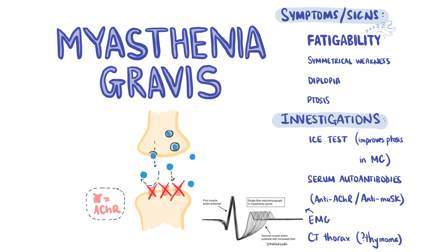Usually, the first symptoms a patient will experience are diplopia and drooping of the eyelids. The first-line test for myasthenia gravis in patients with ptosis is the ice test. Crushed ice in a latex glove is applied to the eye for three minutes. In myasthenia gravis, this leads to improvement of ptosis, but in other causes of ptosis there will be no improvement. The diagnostic investigation is bloods for autoantibodies to acetylcholine receptors. If this comes back negative, then test for anti-muscle specific tyrosine kinase antibodies.